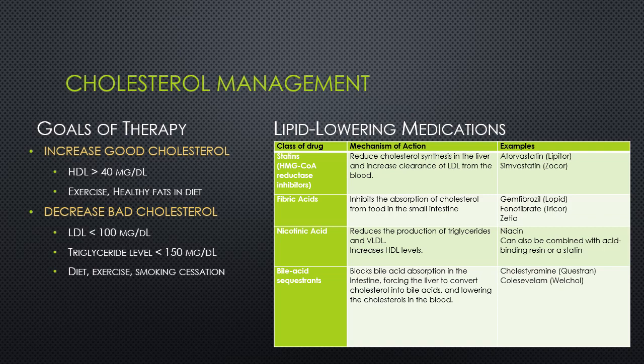These goals can be accomplished through diet, exercise, smoking cessation, and eating healthy fats, but we can also add in lipid-lowering medications. Statins reduce the cholesterol synthesis within the liver and increase the amount of LDL cleared from the blood. Fibric acids inhibit the absorption of cholesterol from food in the small intestine. Nicotinic acid reduces the production of triglycerides and very low-density lipids, or VLDLs, and also increases HDL levels. And bile acid sequestrants block bile acid absorption in the intestine, which forces the liver to convert cholesterol into bile acids, lowering the cholesterol in the blood.